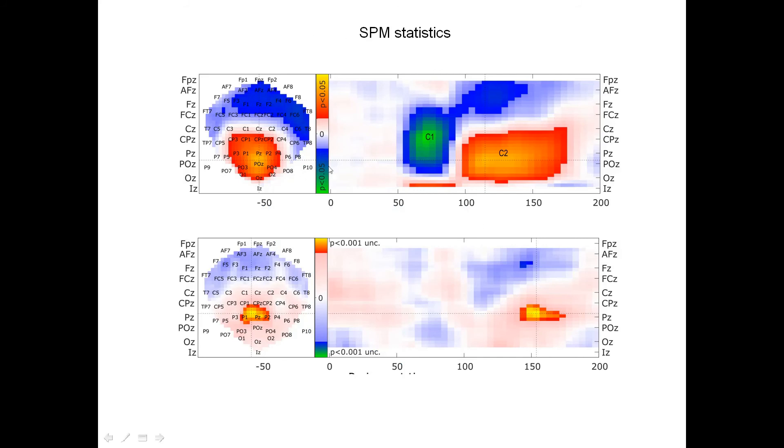This is very significant, corrected for everything possible. We have a huge occipital block of significant activation at the level of C2 and also at the level of C1. The topography, by the way, is not the same. C1 is obviously more anterior than C2.